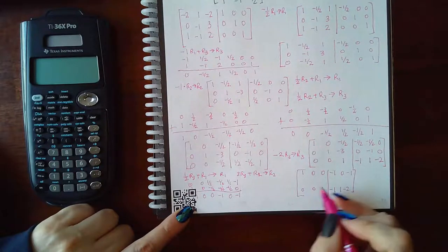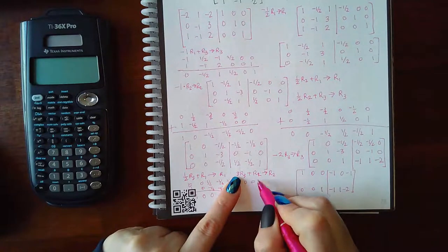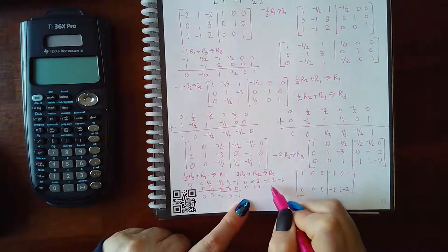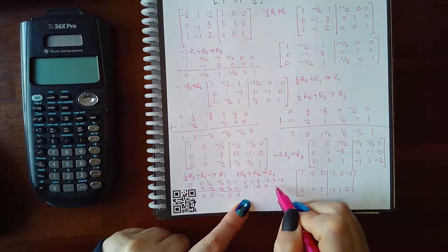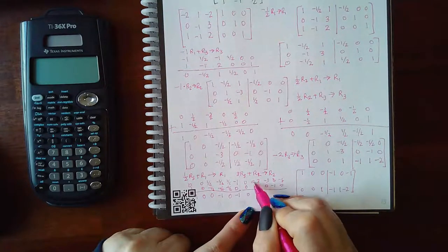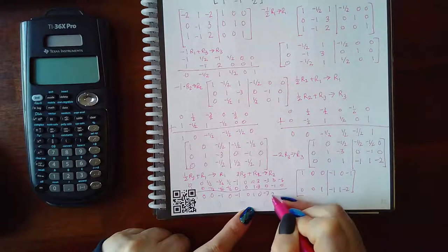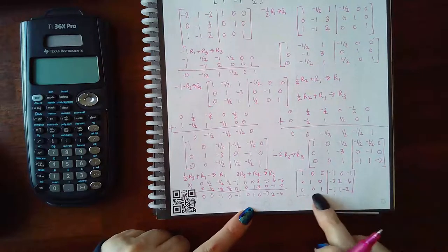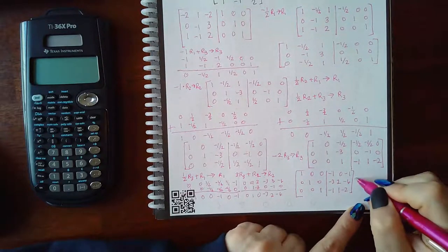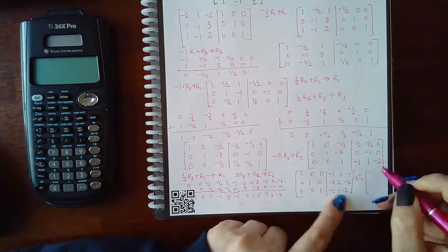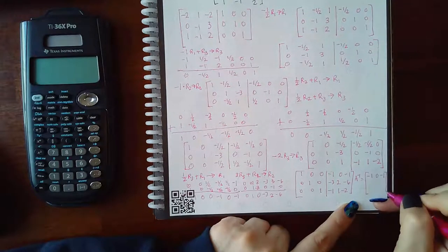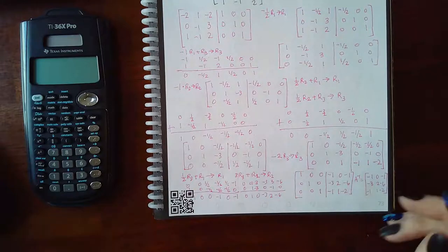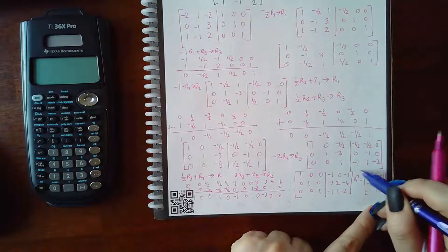For the middle row: three times row three gives zero, zero, three, negative three, three, negative six; adding row two underneath gives the new row two. Now the left-hand side is the identity matrix, which means A-inverse is this matrix: negative one, zero, negative one; negative one, negative three, two; negative six, negative one, one — wait, negative one, one, and negative two. That is our final answer.